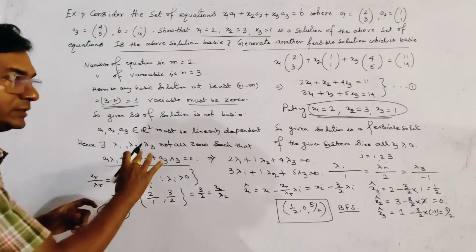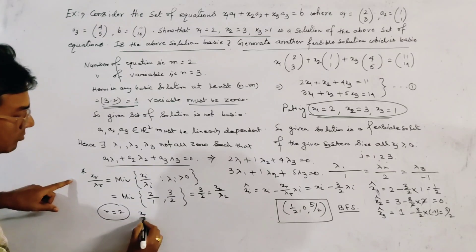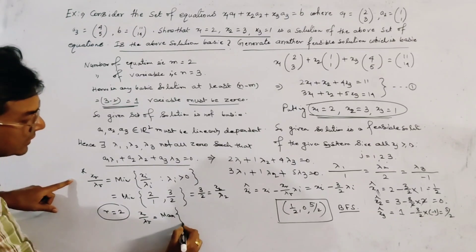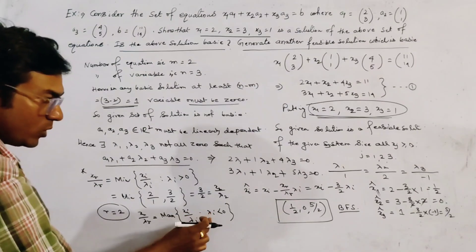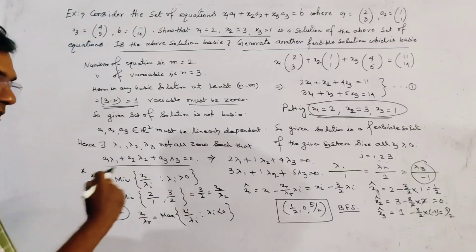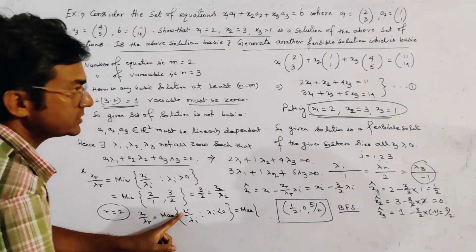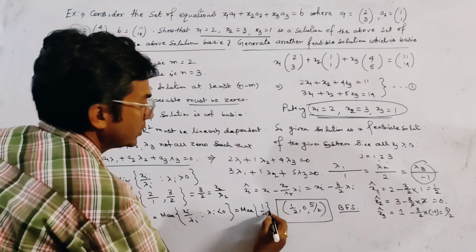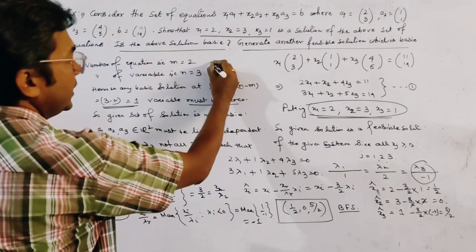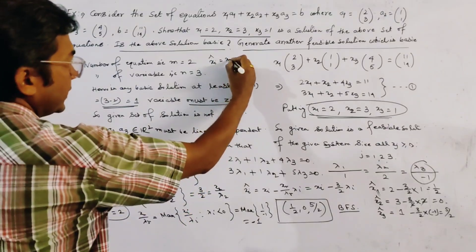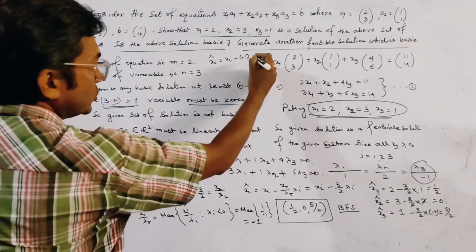We can also solve this by another method, changing the approach. Here we take xR/lambdaR = max of xi/lambda_i subject to lambda_i < 0. Only lambda3 = -1 is negative, so we get max{x3/lambda3} = 1/(−1) = −1. The formula becomes xi_cap = xi − (−1)*lambda_i = xi + lambda_i.